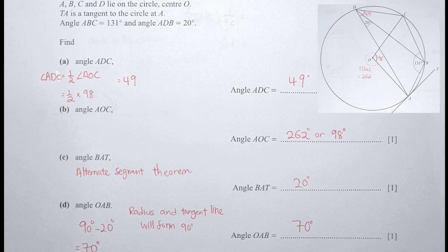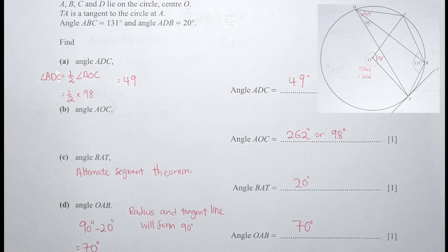Question 20 is a circle theorem question. Angle ADC is the angle from the circumference; the angle at the center is AOC. Since ADC is half of AOC, I first find the major arc value of AOC by tracing through A, B, C — multiplying the circumference angle by 2 gives 262. Then 360 minus 262 equals 98, and 98 divided by 2 gives 49, which is the value of angle ADC.